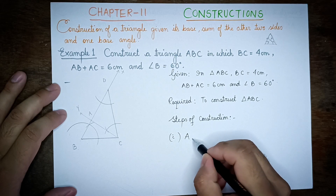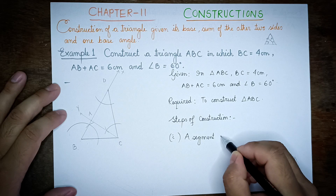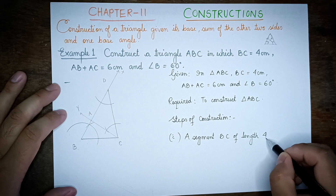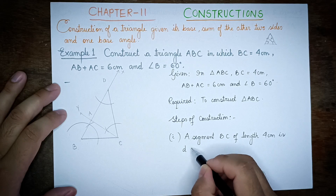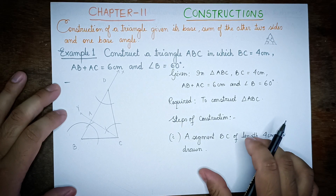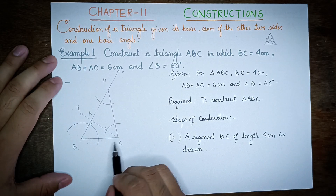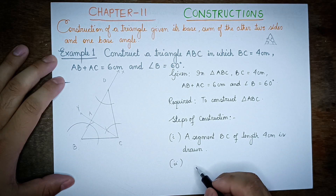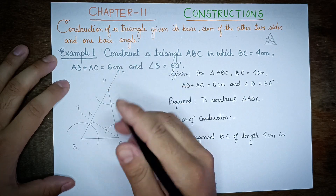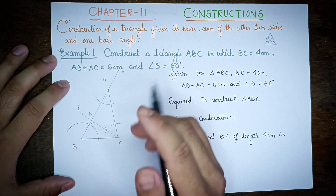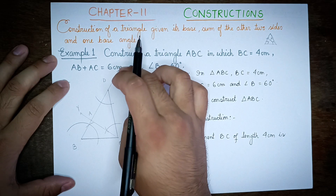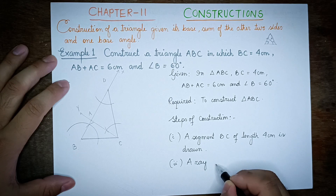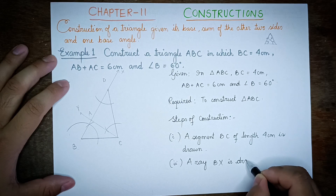Step 1: A segment BC of length 4 cm is drawn. Ray Bx is drawn.